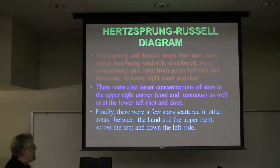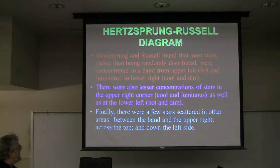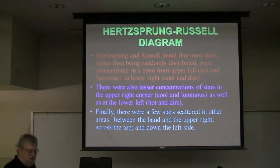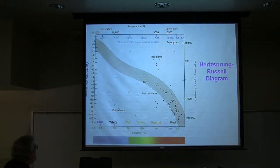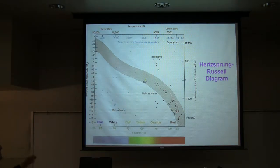There are also a few stars scattered around other places — like across the top and down the left side — but most of them are on that misnomer main sequence. So that's some of the scattered ones, but most of them are right along that belt through the middle.